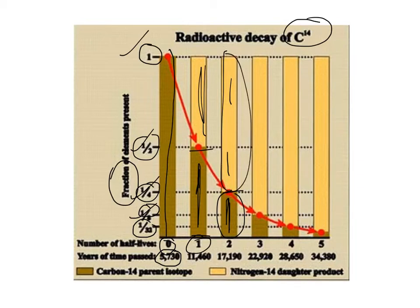You keep taking the brown parent that's left and keep halving it, and whatever goes to daughter just adds on to the previous amount. So as you go across from 0, 1, 2, 3, 4, 5, you can see that the amount of daughter is increasing and the amount of parent is decreasing.